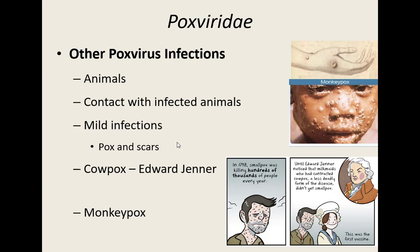Edward Jenner figured out that milkmaids in very close contact with cows — although they would get sores on their hands — were completely immune to smallpox. Because cowpox and smallpox are both in the Poxviridae family and are quite similar, the body that recognized cowpox could also recognize smallpox. He developed a vaccine using the pus-filled fluid from the pox on milkmaids and showed that those people were actually immune to smallpox.